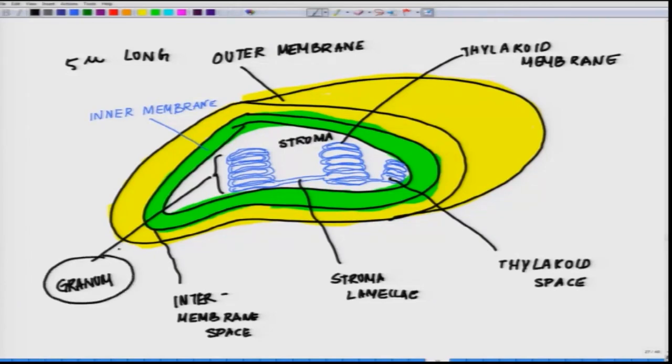A pile of these sacs are called the granum. As you could see, this is the pile of those sacs which is called the granum. And the different granum are connected by region of thylakoid membrane called stroma lamellae which is connecting these different granum. And the thylakoid membranes separate the thylakoid space from stroma space.